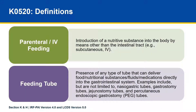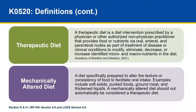Here are just a few definitions to get us started. Parenteral or IV feeding is nutrition that avoids the GI tract, while a feeding tube delivers nutrition directly into the GI system. A therapeutic diet is a prescribed diet as part of a treatment for a disease or condition — for example, a low-sodium diet. A mechanically altered diet alters the texture or consistency of the food to facilitate oral intake, like pureed foods or thickened liquids.